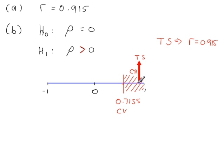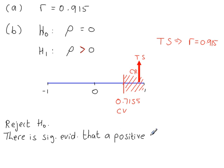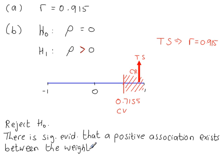Very clearly in the rejection region, so test conclusion: reject H₀. And then we can conclude that there is significant evidence that a positive association exists between the weight gains of mothers and the weights of their children at three years of age.